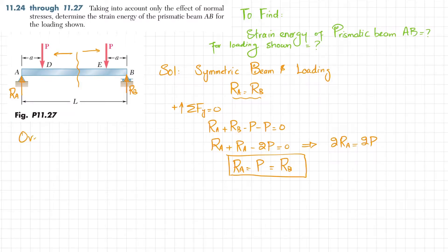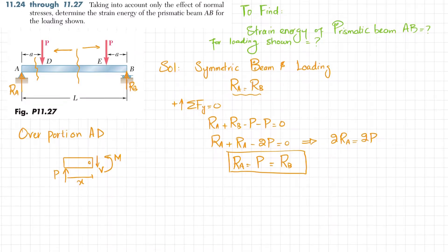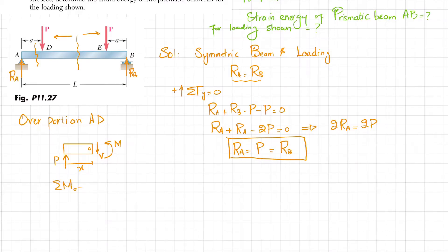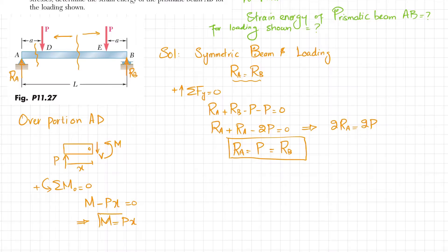Now we take portion AD. If you cut the beam in portion AD and draw the free body diagram, you have RA equal to P acting upward. Let the distance from A to the cut be X. Taking the sum of moments about the cut point (0.0) as zero, with counterclockwise positive: M minus P times X equals zero, so M equals PX.